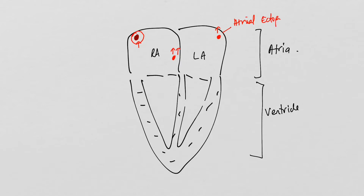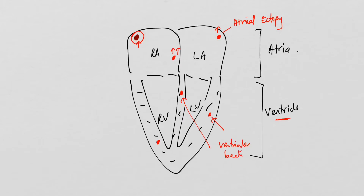This atrial ectopic beat is also known as a skinny complex, which I'll explain later. There are other forms of ectopic beats which can originate from the ventricles — for example from the midline of the heart, close to the inferior wall on the right ventricular surface, or from the left ventricle. Any one of these can be termed ventricular ectopic beats.